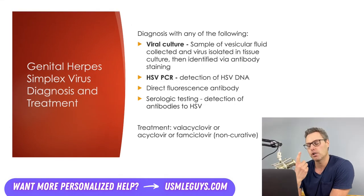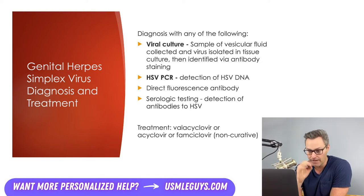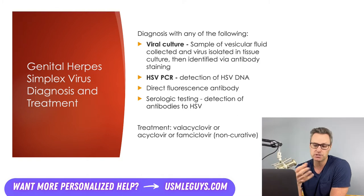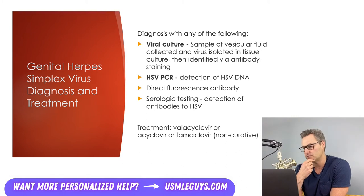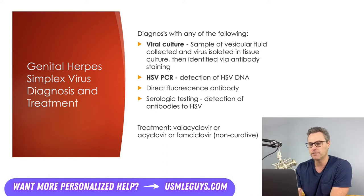Herpes can be diagnosed with a viral culture — collecting a sample of vesicular fluid, isolating the virus, then identifying it with antibody staining — or with HSV PCR to detect the presence of the virus. These are the two most common diagnostic methods. Less common routes include direct fluorescence antibody and serologic testing to detect antibodies to HSV. Treatment, which is not curative, includes valacyclovir, acyclovir, and famciclovir. Remember, this is a virus — we can't get rid of it, only mitigate the signs and symptoms.